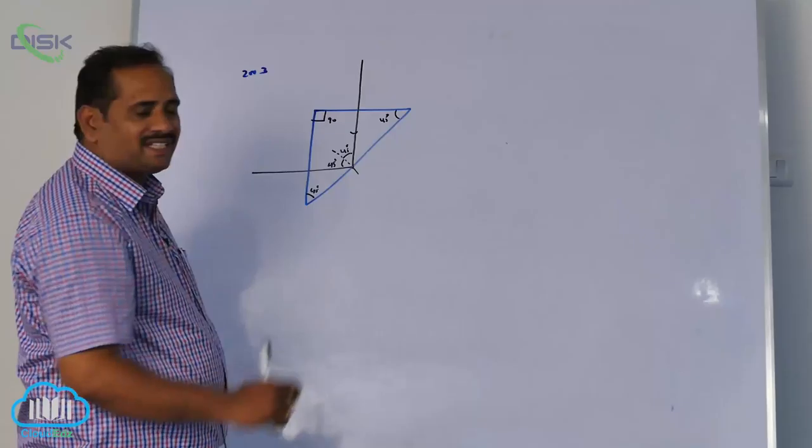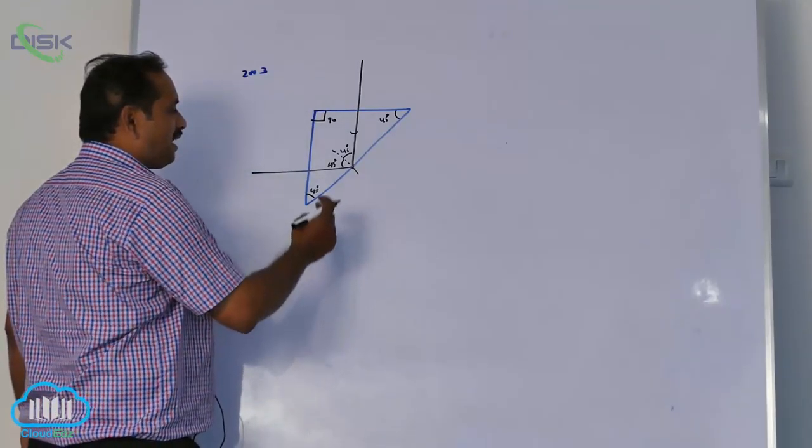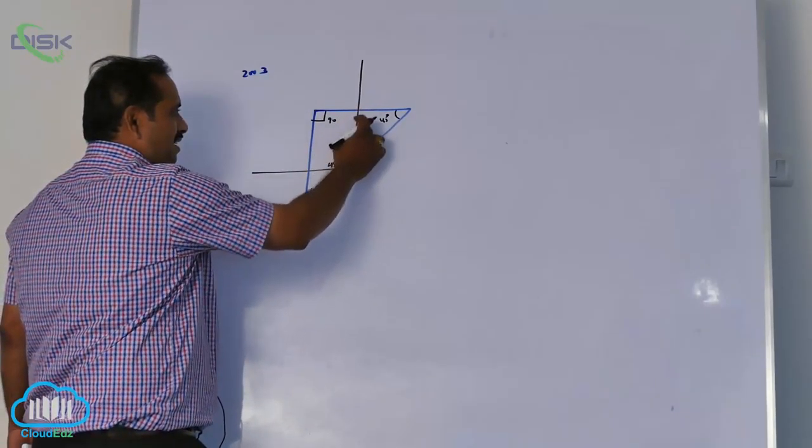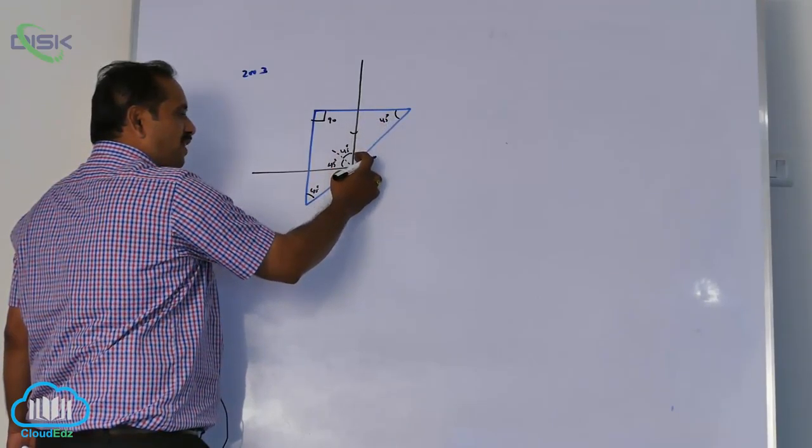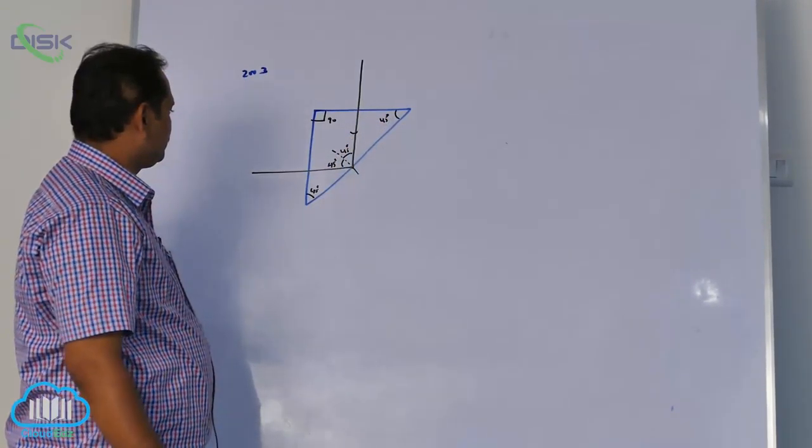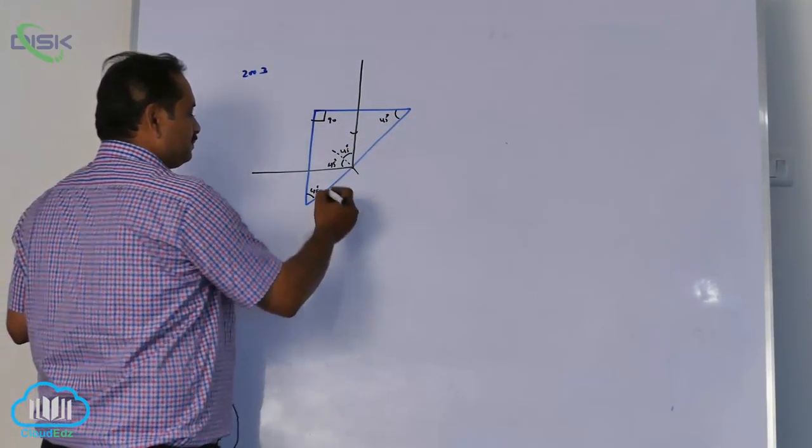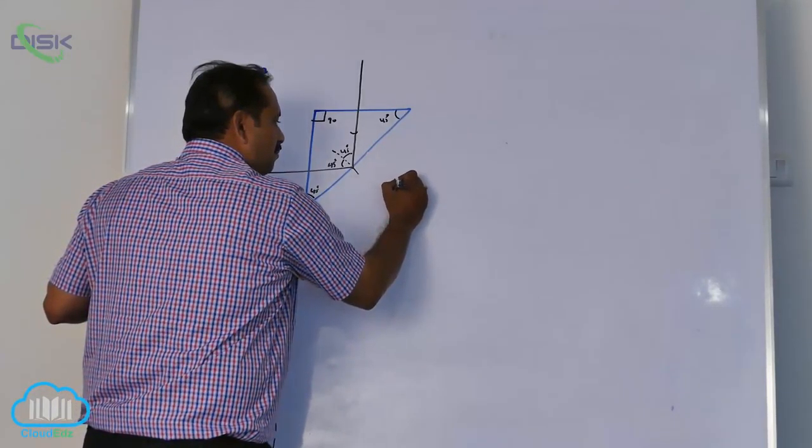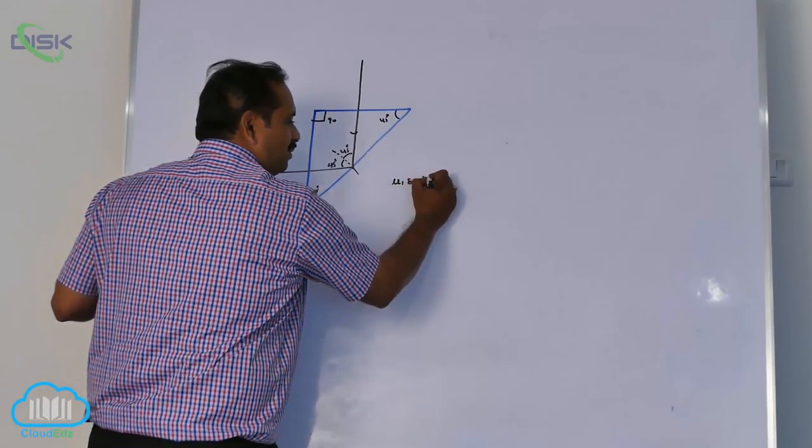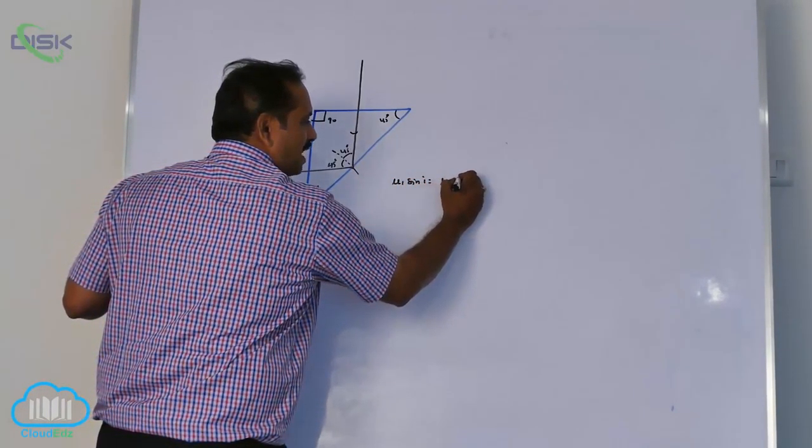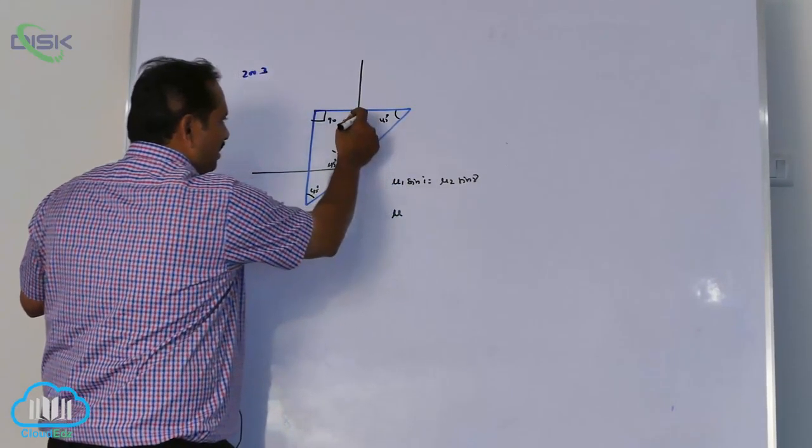This is 90°, 45°, 45° - this becomes 45°. For total internal reflection, μ₁ sin i = μ₂ sin r. From denser to rarer medium: μ sin i, where i = 45°.